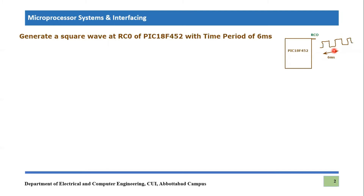Since we are doing this example using timers, this three millisecond delay will be generated using Timer Zero of the PIC18F452. If you remember the last lecture, we calculated the required delay of three milliseconds and produced Timer Zero L and Timer Zero H values. I won't be recalculating them — I will use those same values in this program.